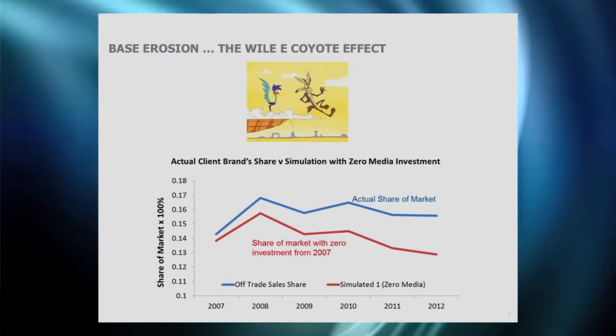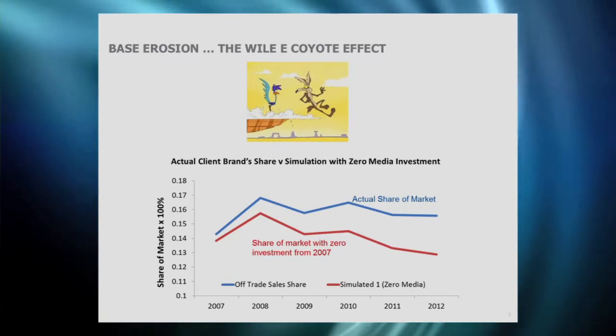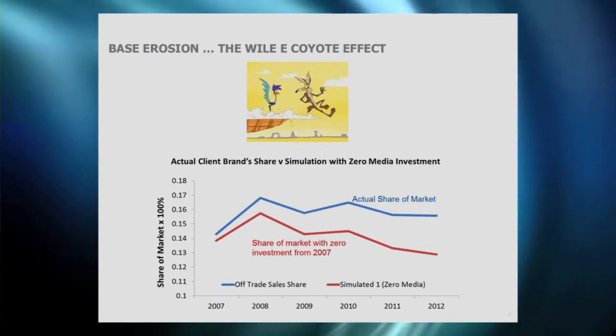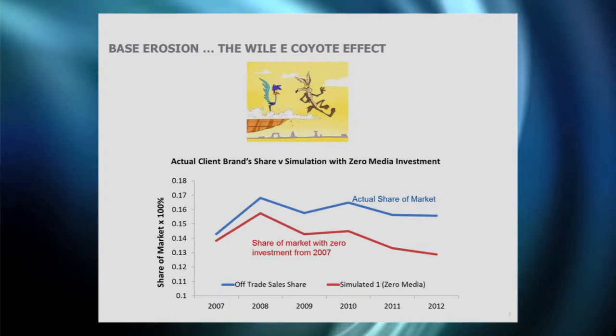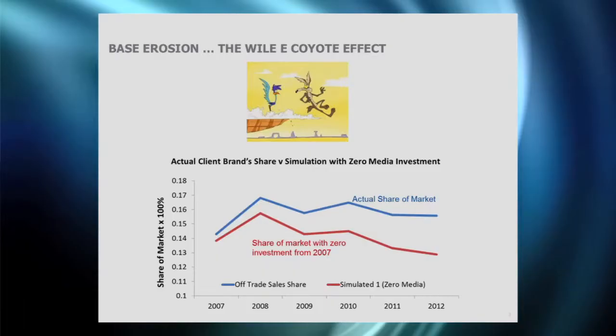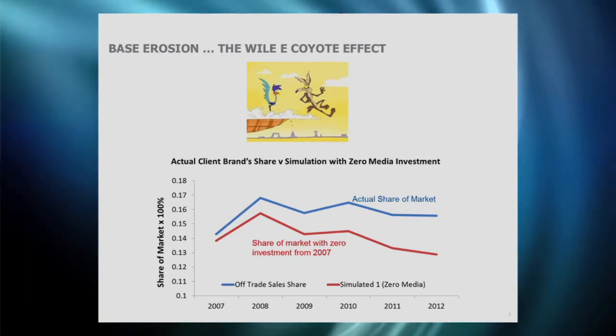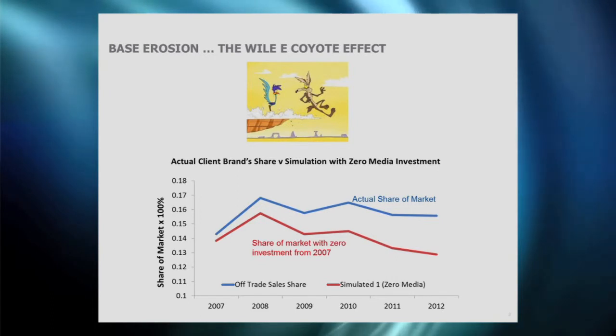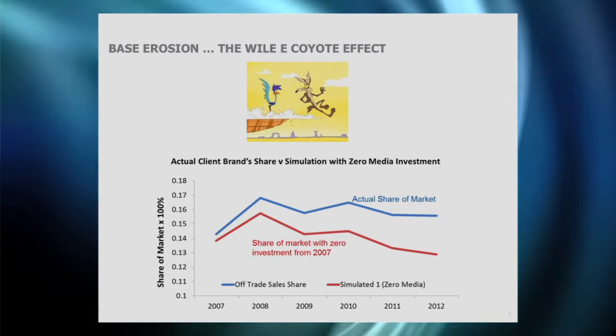Here's a piece of long-run modelling done for a brand. The blue line is actual market share observed over time. Using the model we went back and asked: what would happen if you spent nothing? In year one, 2007, if you cut the budget, nothing much happens — you don't actually lose much market share. Similarly in year two, not much difference. It's only in year three that the Wile E. Coyote effect takes over, gravity kicks in, and you see baseline erosion happening.